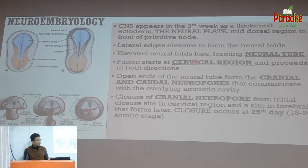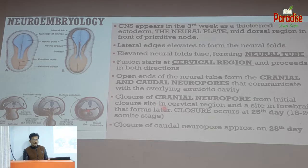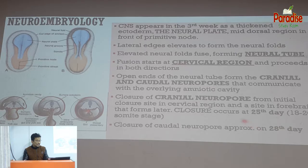Closure of the neural tube is very important — repeatedly tested in NMC exams. Fusion starts at the level of the cervical region. The cranial neuropore closes at the end of the 25th day, and the caudal neuropore closes at approximately the 28th day. So development starts in the third week and the neural tube is completely closed by the end of the fourth week.